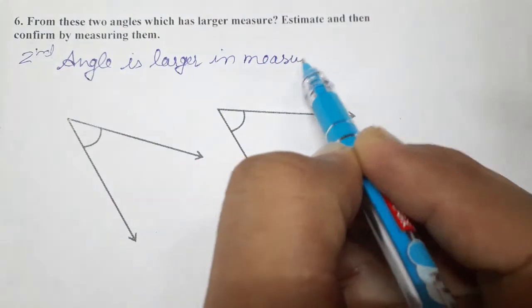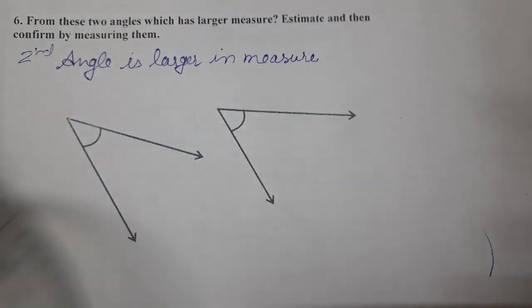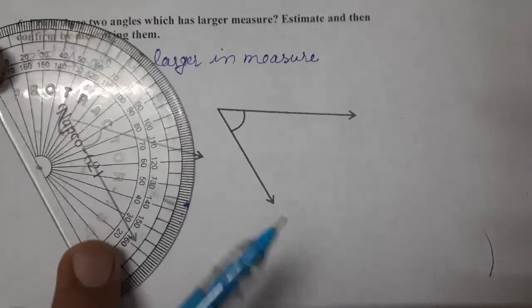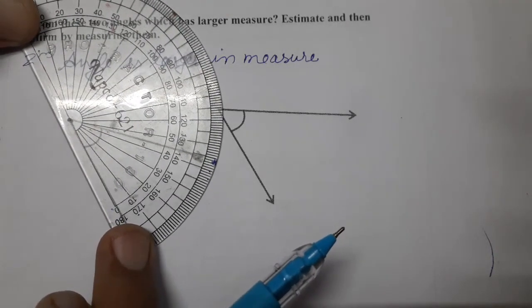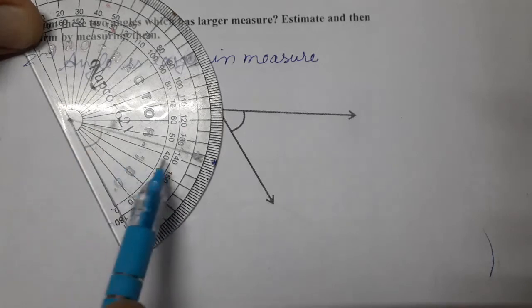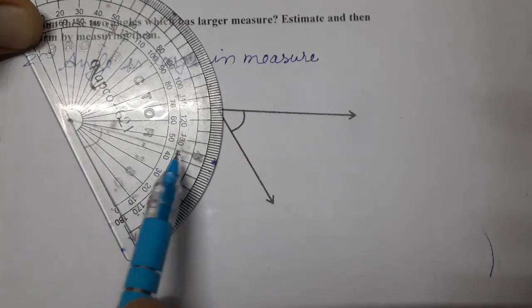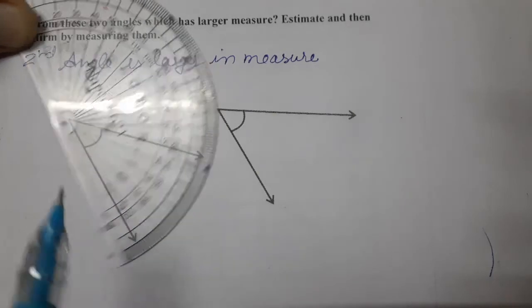And now we have to do actual measurement also. So let's put protractor again and see. It is coming left outer, left inner. See, I have 45, 40 or 50, which mark is 45? So it is 45 degrees.